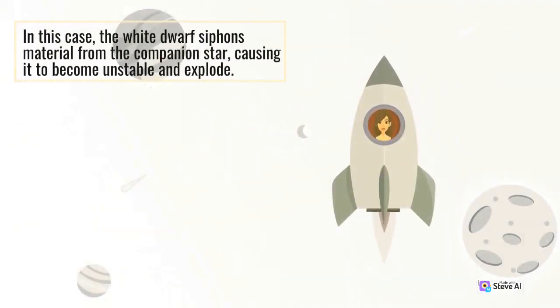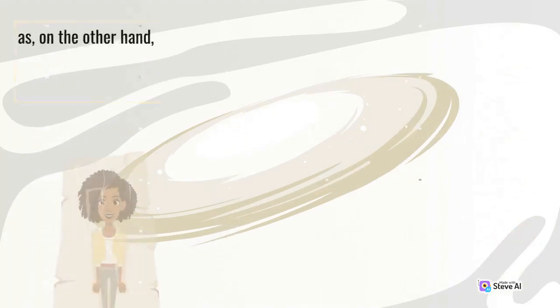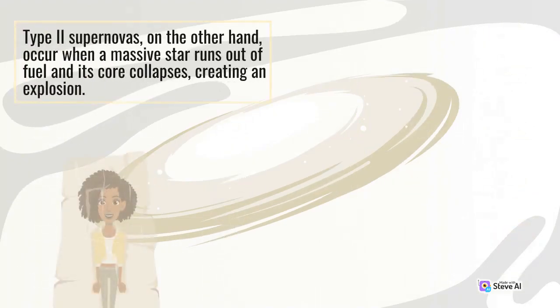In this case, the white dwarf siphons material from the companion star, causing it to become unstable and explode. Type II supernovas, on the other hand, occur when a massive star runs out of fuel and its core collapses, creating an explosion.